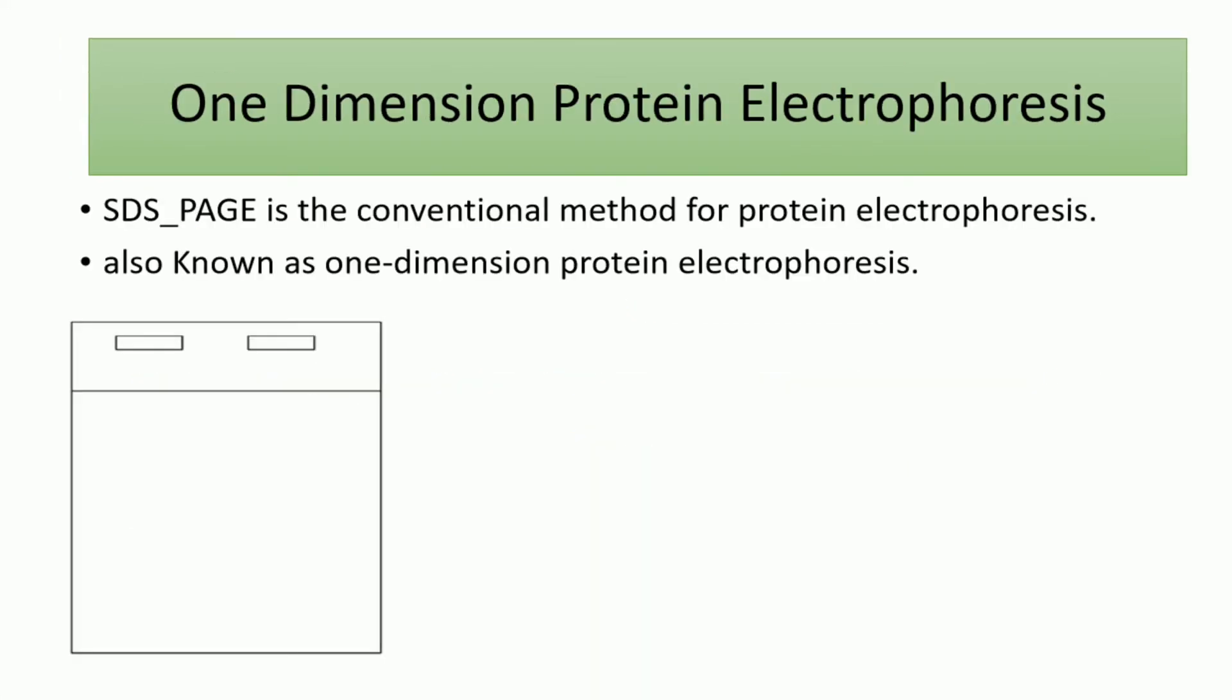First of all, SDS-PAGE is the conventional method for protein electrophoresis. It is molecular weight-based protein electrophoresis and also known as one-dimension protein electrophoresis because it's vertical gel electrophoresis and it depends on only one parameter for protein separation, which is molecular weight.